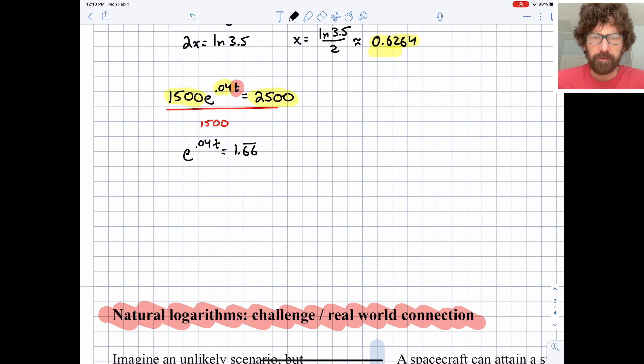I can simply write this right away in log form. Now that we've dealt with the 1,500, 0.04t equals the natural log of 1.66 repeating. I can divide both sides by 0.04.